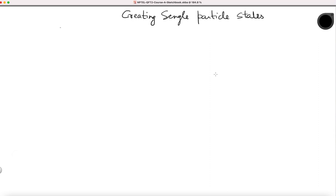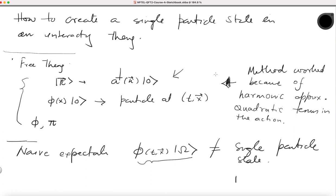Let's resume our discussion and try to create single-particle states in an interacting quantum field theory. We have already talked about this in a previous video, and the goal is to find a way to create these single-particle states of definite momentum k. We are in search of an operator equivalent to a-dagger in free theory, which when acting on the vacuum gives a state of this kind.